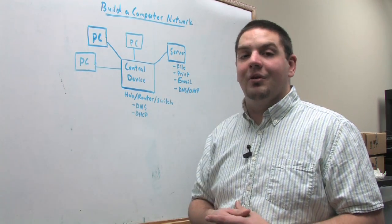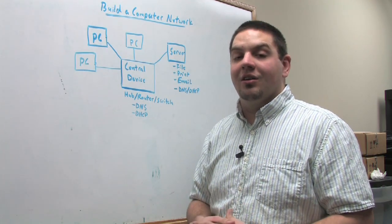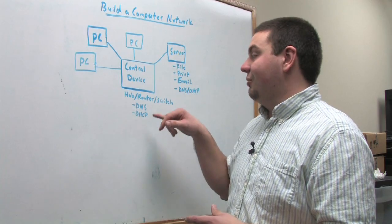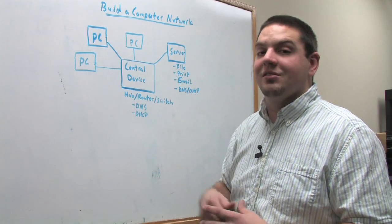So those are the three basic components to a computer network. And if you were to build them, the easiest way would probably be to just use a router and a couple of PCs.